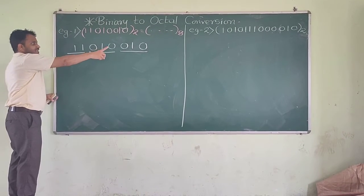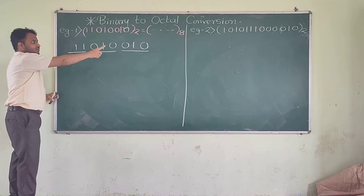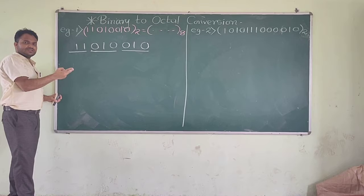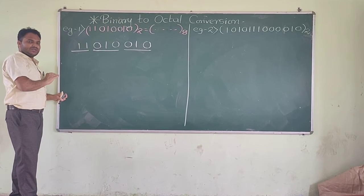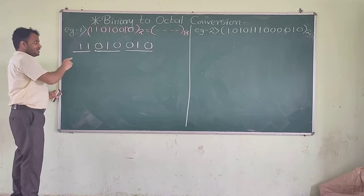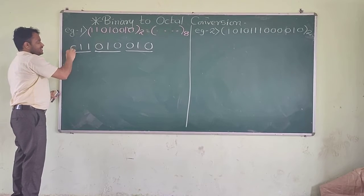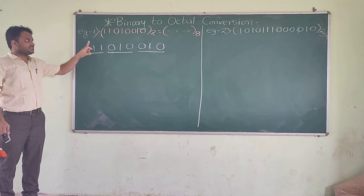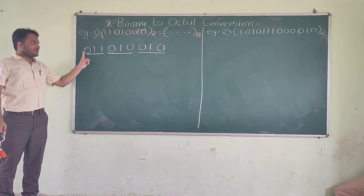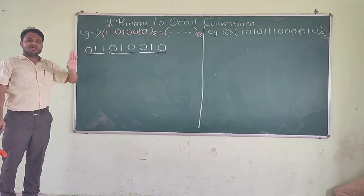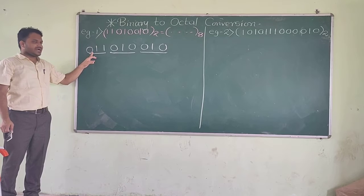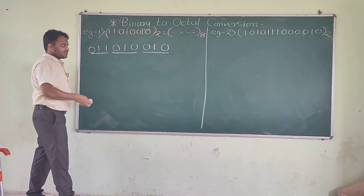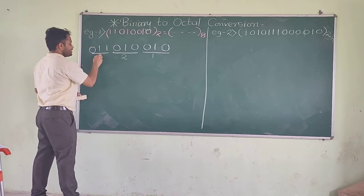Now, if you have groups where the leftmost group has fewer than 3 bits, don't let it be a burden — just add zeros. Because by adding 0 at this position, it will not change the original number. So just add 0 here. By adding this 0, now you will get 3 groups. I will call it group number 1, 2, and 3.